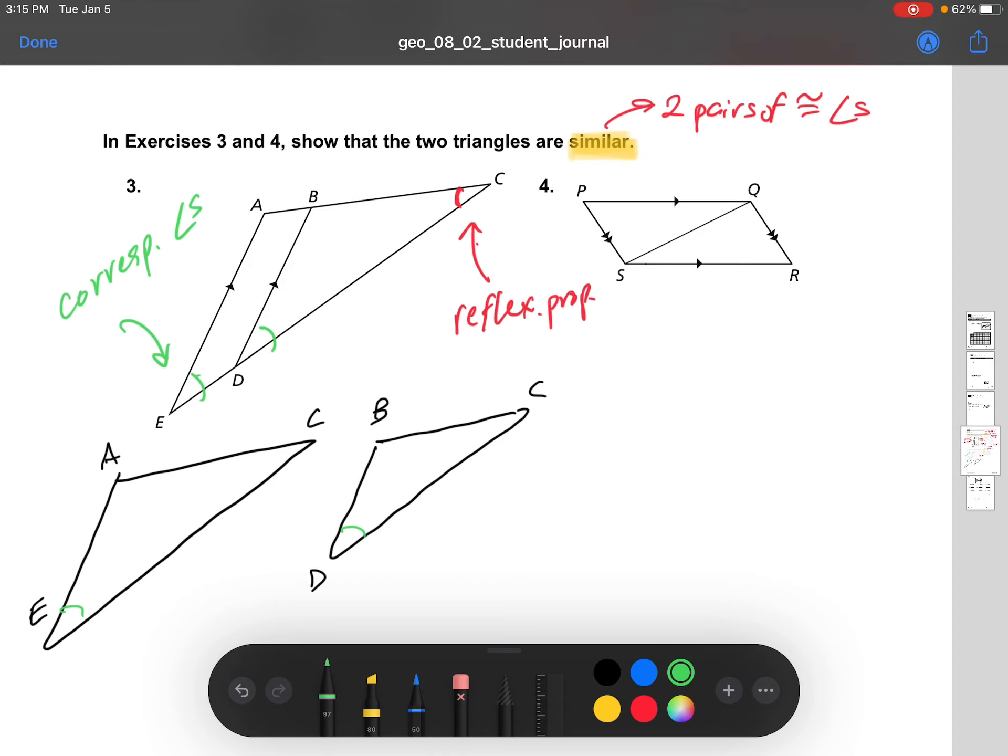Okay, so what we marked is these two angles in green. We know that those are congruent because they're corresponding angles. Let's use a double mark there. And then angle C belongs to both triangles, so it's going to have the same measure regardless of what triangle it's in. So if we just look at the markings, we've already marked two pairs of congruent angles. So that is already enough to say that the triangles are similar.